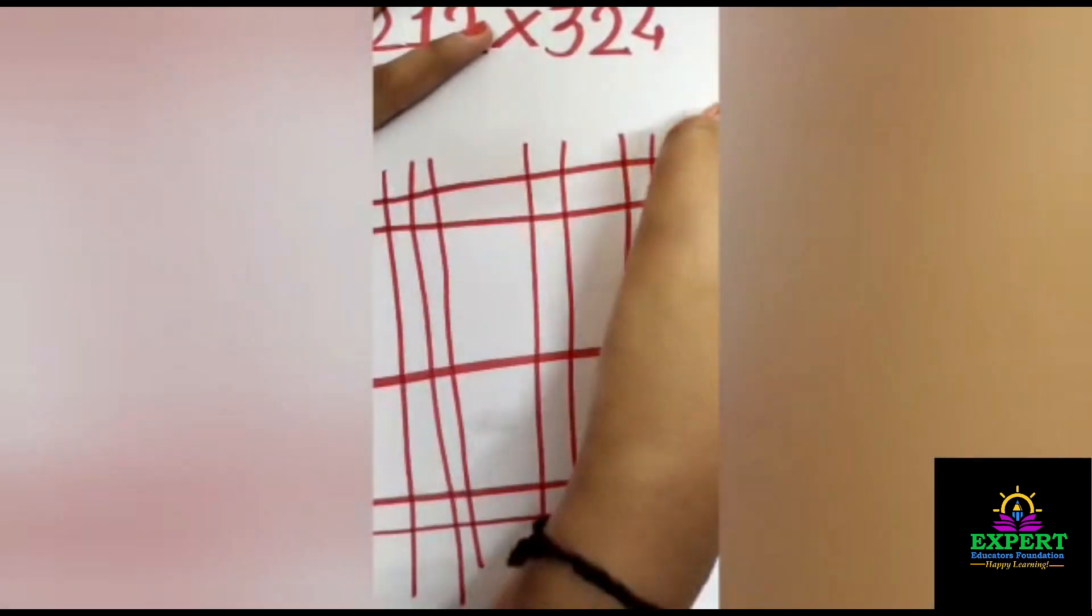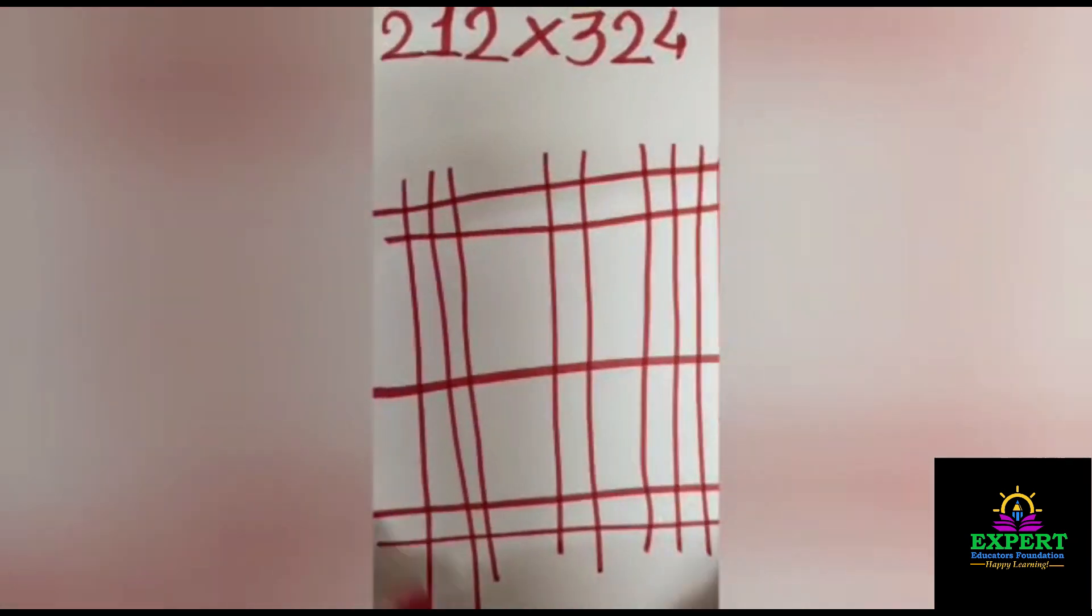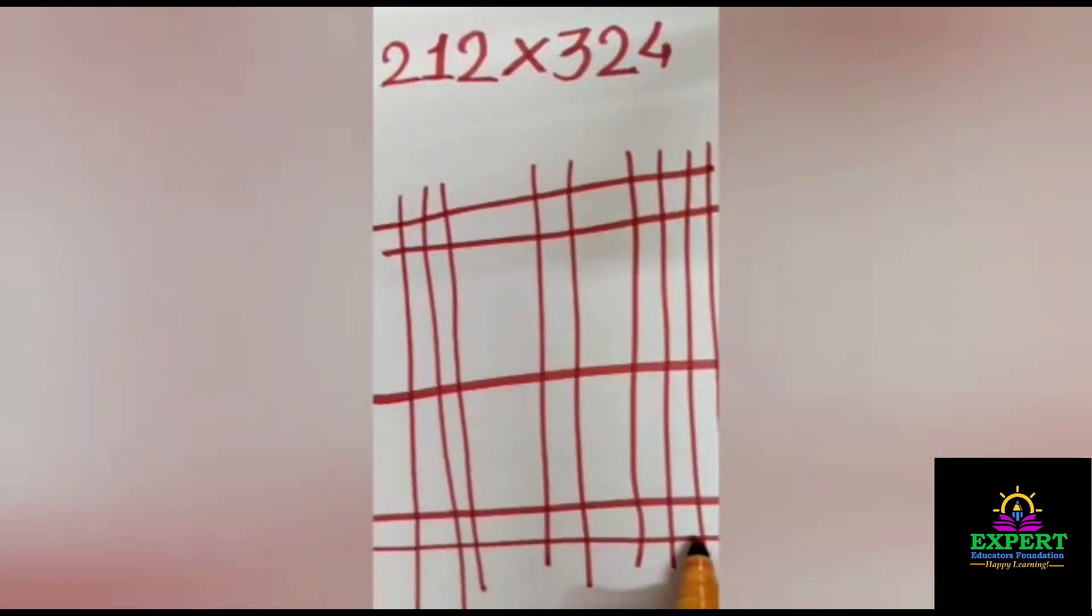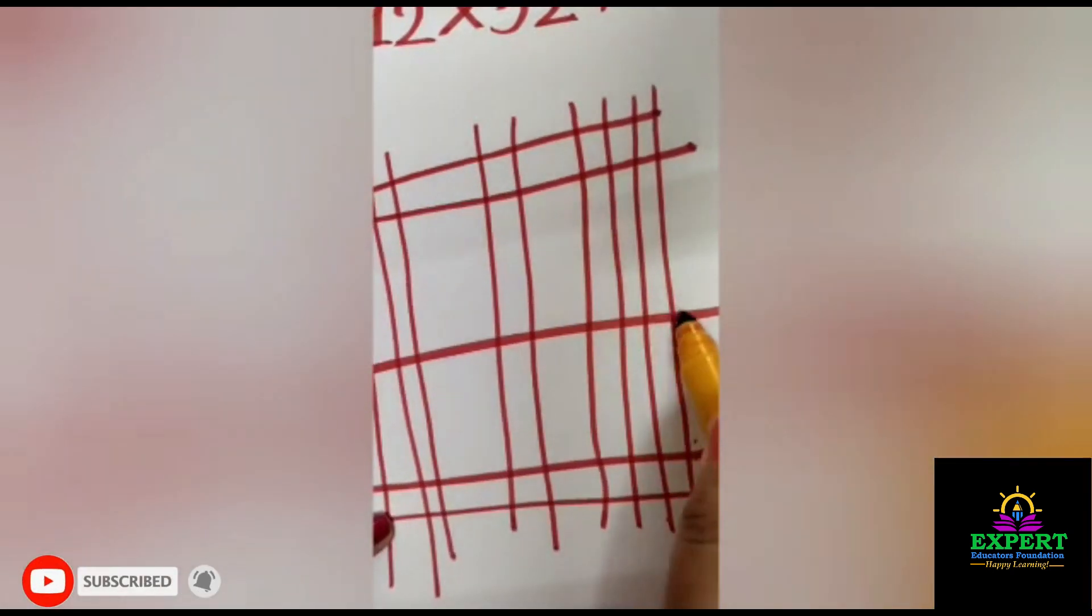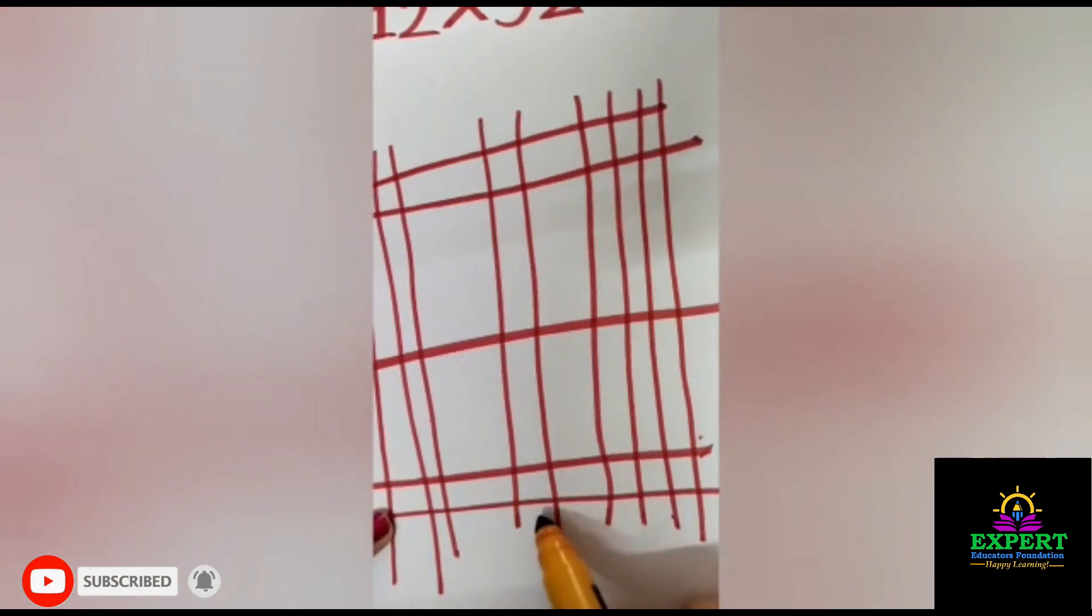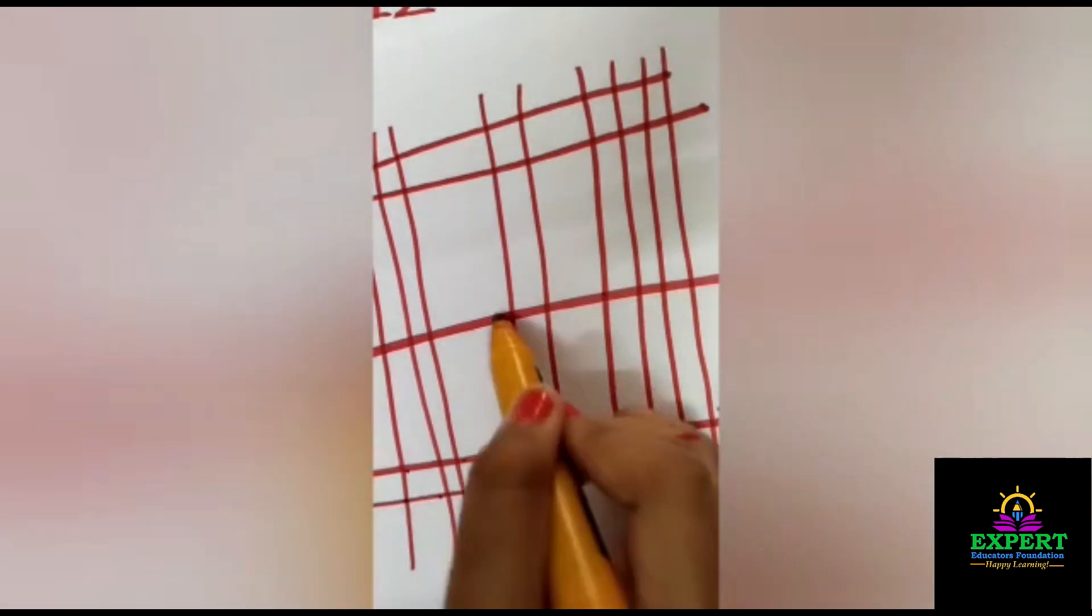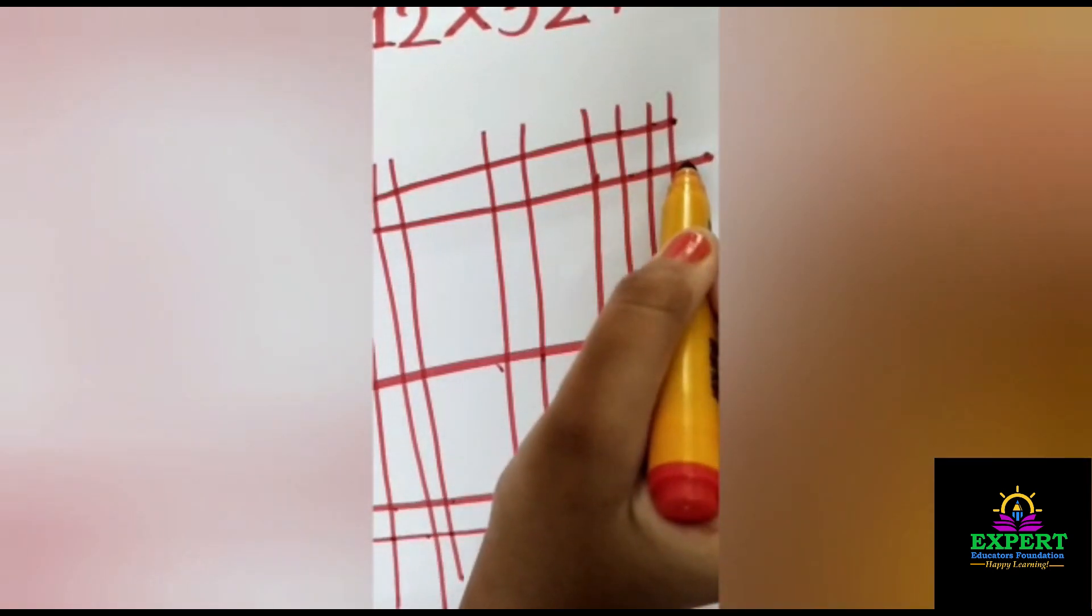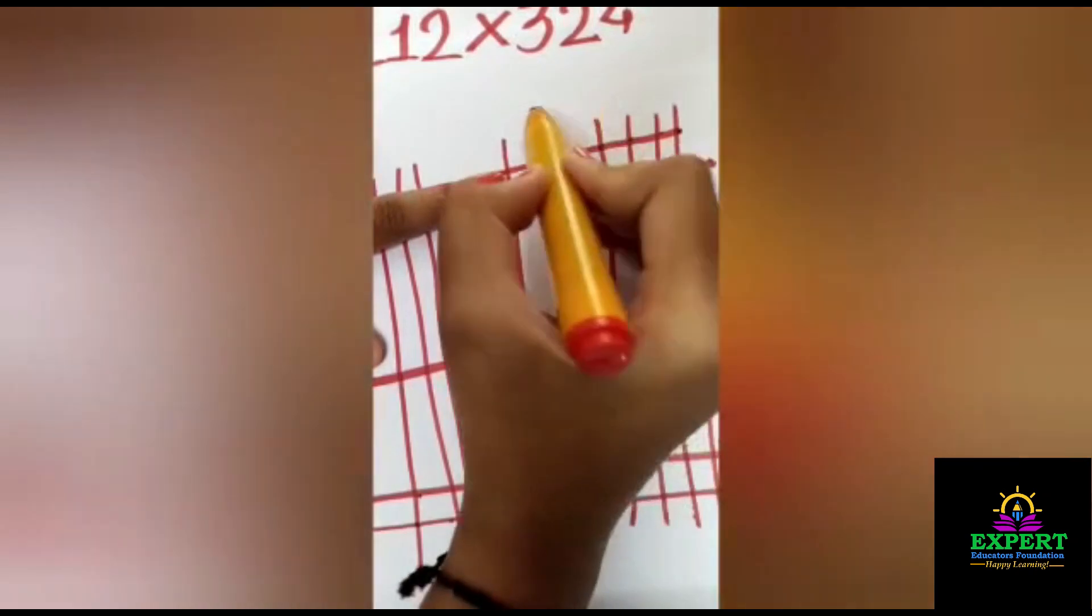Now again we will count this by the right side. So here it is one, two, three, four, five, six, seven, eight. So here we will write 8. The next is one, two, three, four, five, six, seven, eight. The next one is one, two, three, four, five, six, seven, eight, nine, ten, eleven, twelve, thirteen, fourteen, fifteen, sixteen.